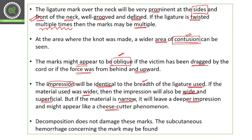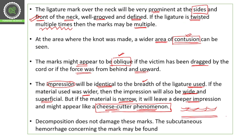If the strangulating material is a very thin rope or wire, it will create a deeper impression and might appear like the cheese cutter phenomenon. For example, using a thin wire will cause injuries more prominent and deep compared to a wider rope. Importantly, decomposition does not damage these ligature marks, and subcutaneous hemorrhage around the mark may remain clearly visible.